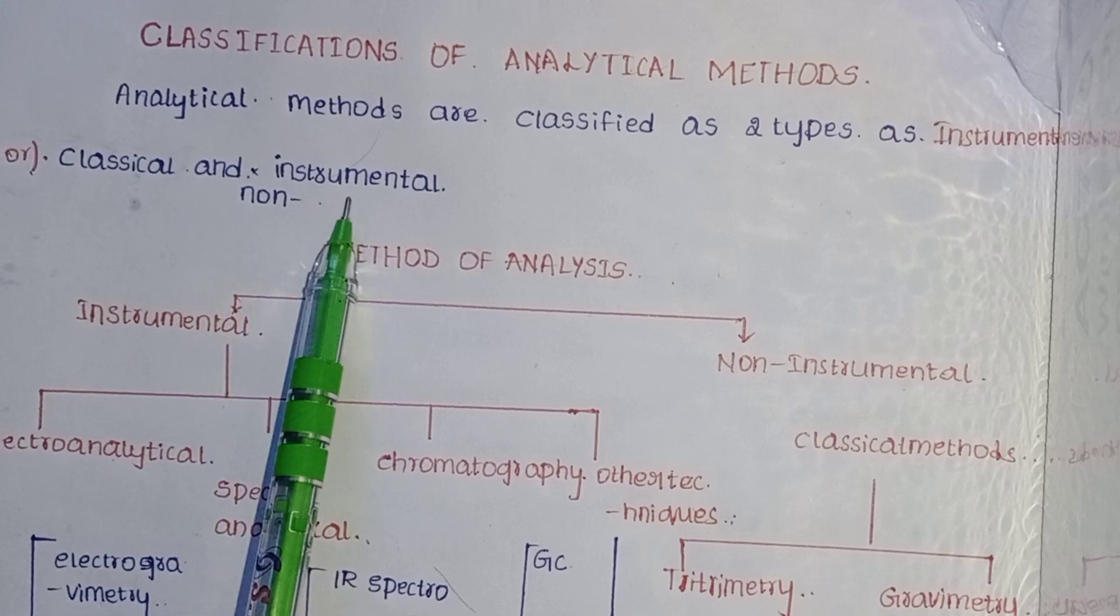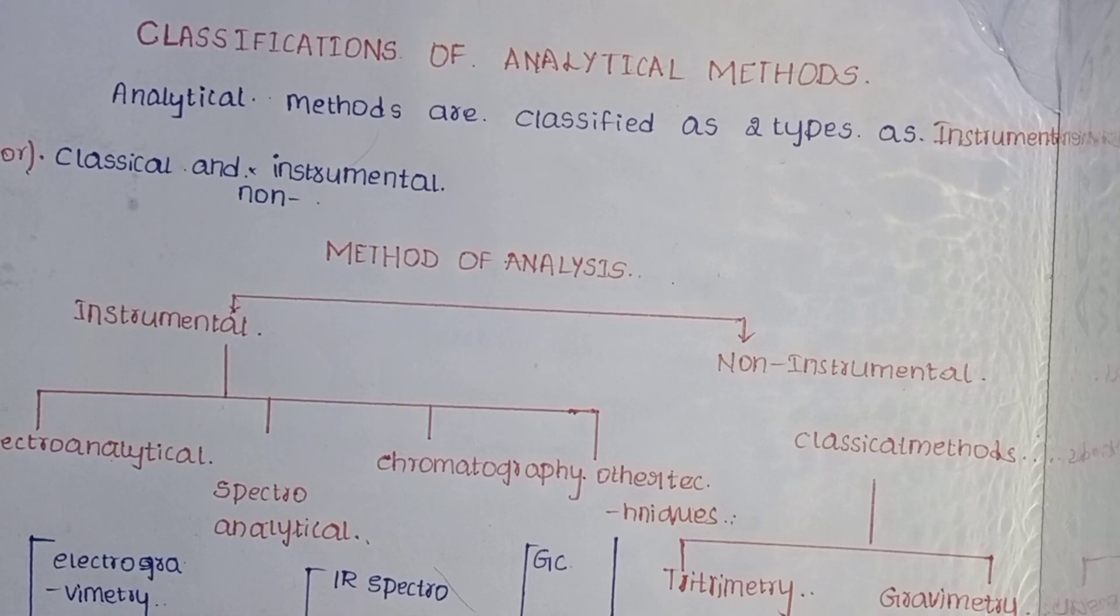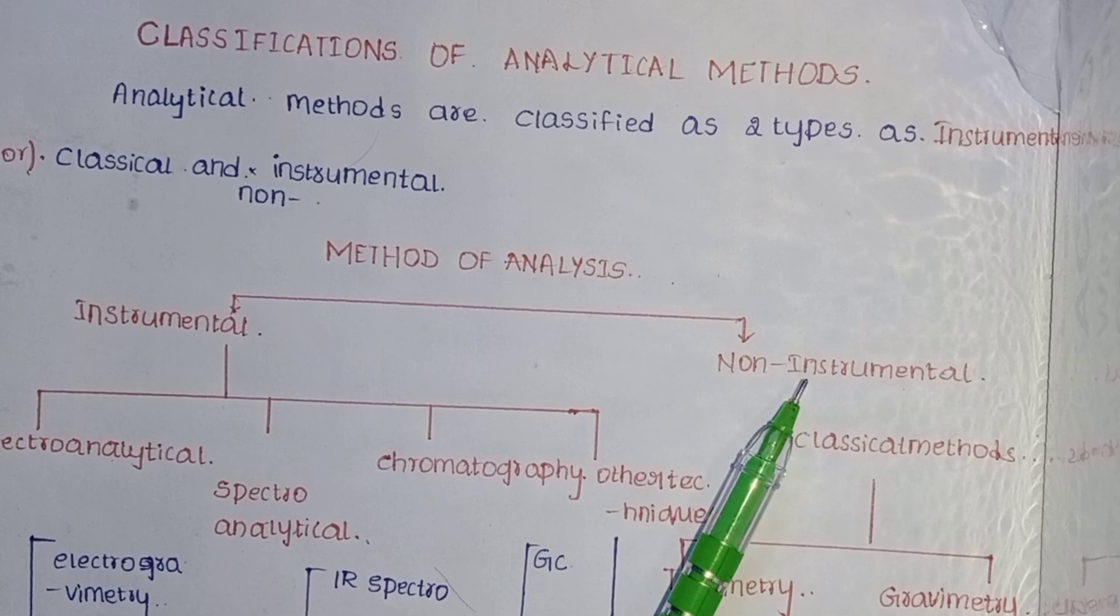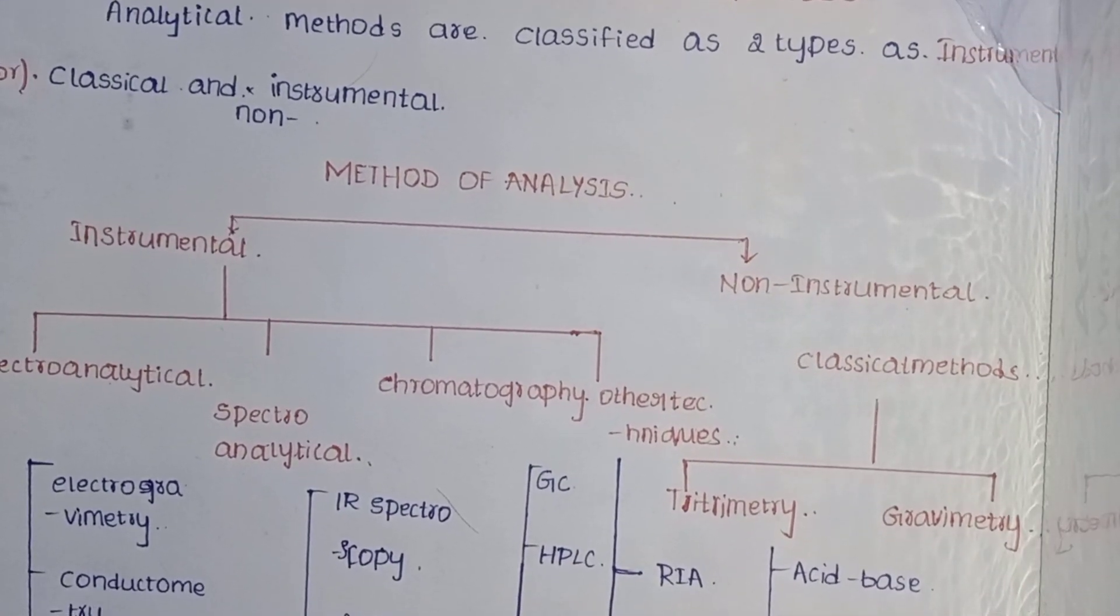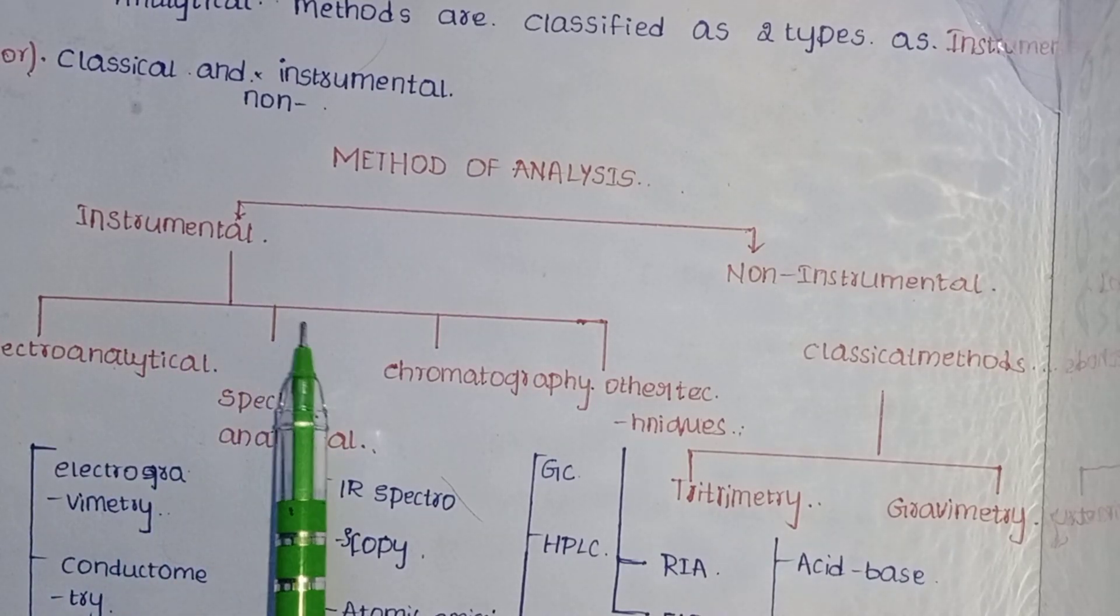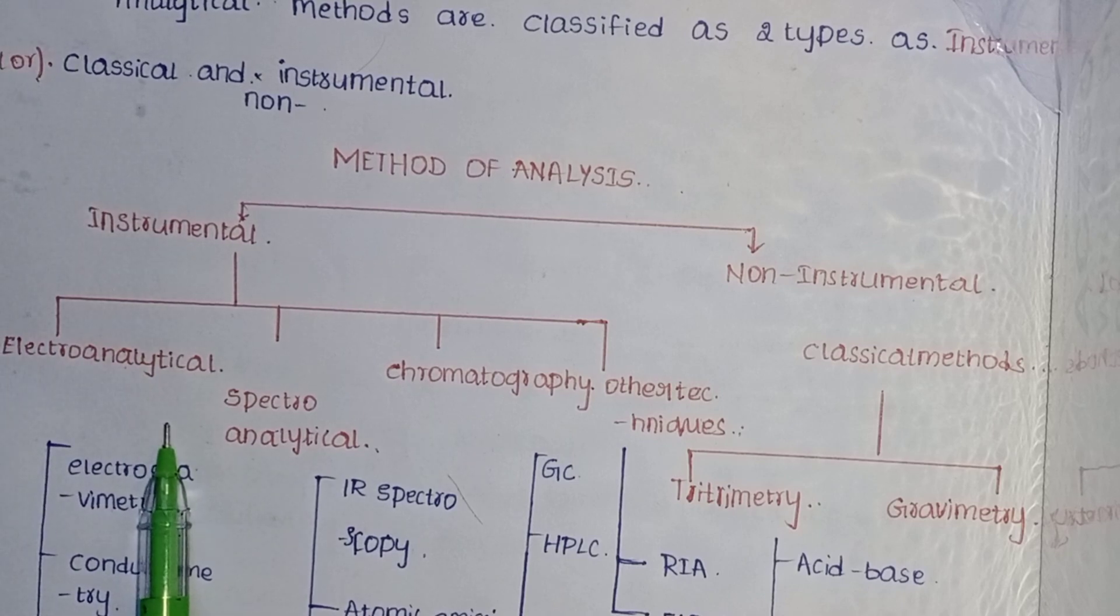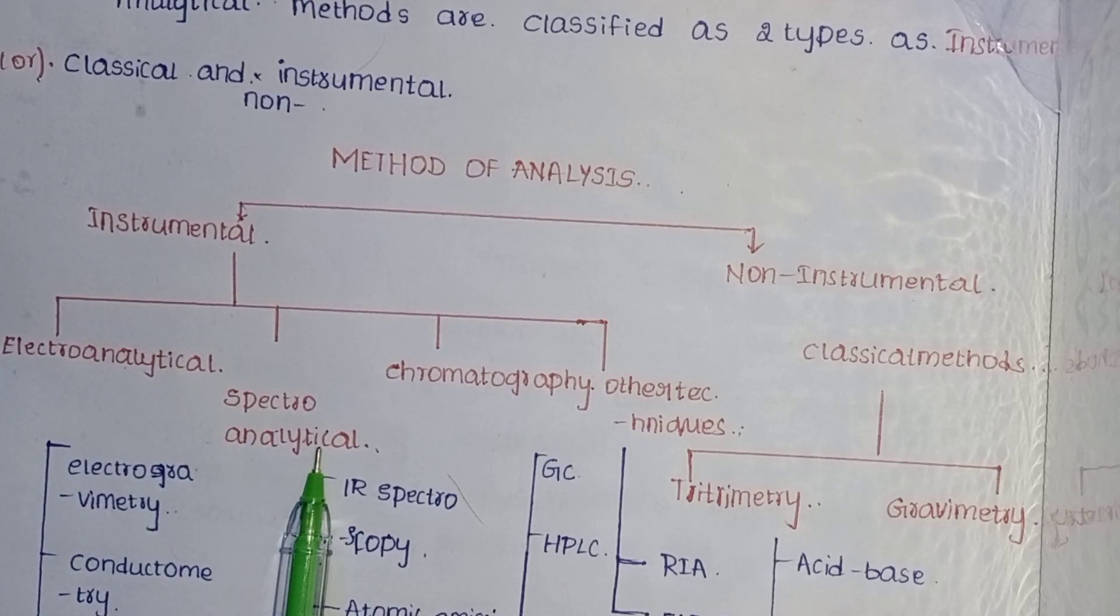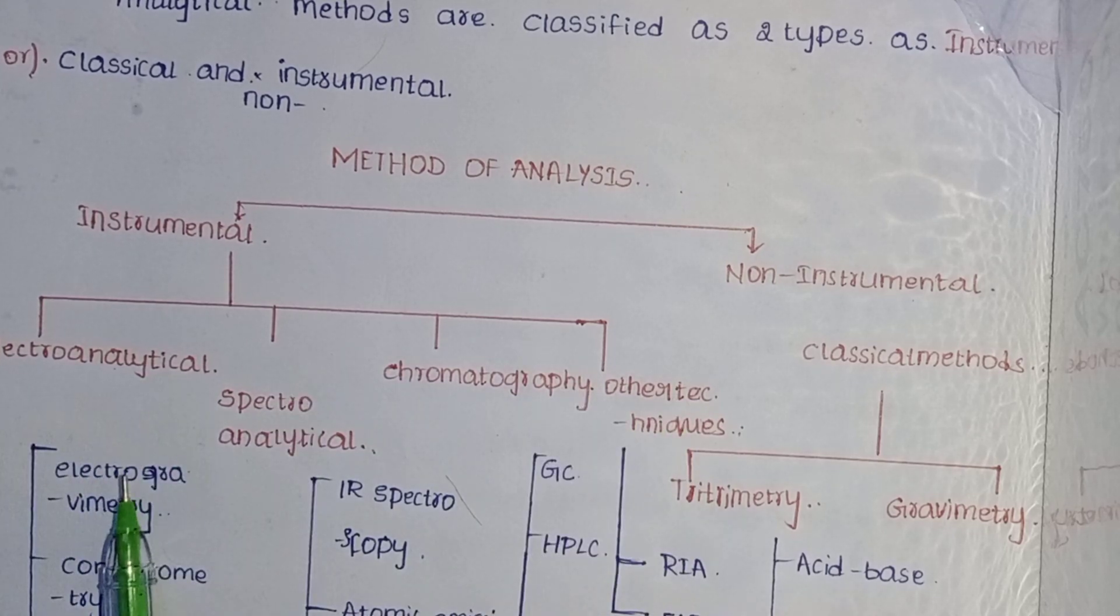Classical is also known as the non-instrumental method. Analytical methods are divided into two types: first, instrumental type, and next, non-instrumental method, also known as classical method. The instrumental method is divided into four types: electroanalytical method, spectroanalytical, chromatography, and other techniques.